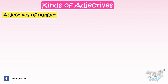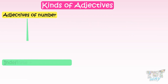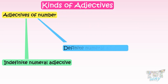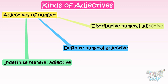Adjectives of Number are of three types: Indefinite Numeral Adjective, Definite Numeral Adjective, and Distributive Numeral Adjective. Now let's learn these three one by one.